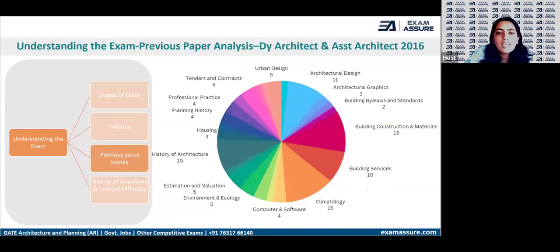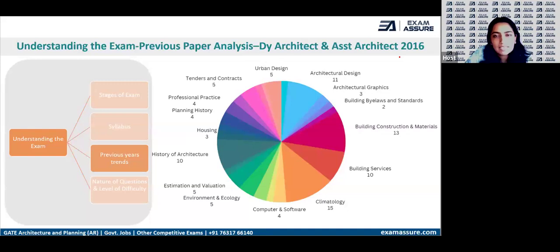A similar trend continues for the 2016 paper, which was conducted for two posts — deputy architect and assistant architect. Here again, there is more weightage given to architectural design, building construction, building services, environment, and history of architecture.